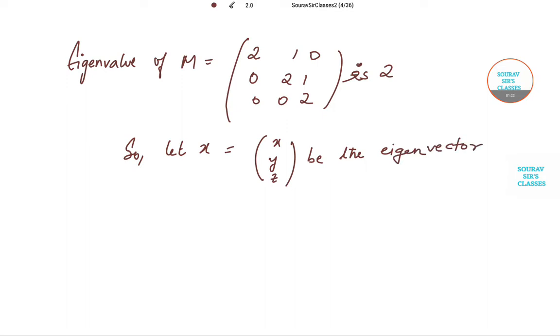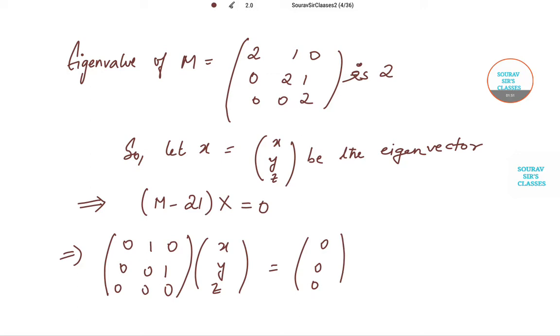Now we have, this implies that (M - 2I)x = 0. So let us substitute the values. So we have [-2, 2, 1; 0, -2, 2; 0, 0, 0] times (x, y, z) will be equal to (0, 0, 0), isn't it?